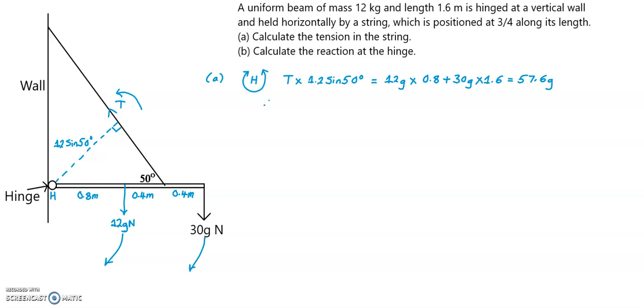Therefore T equals 57.6 times g, which is 9.8 N per kg, so 9.8, all over 1.2 m sine 50 degrees, and this gives the tension in the string of 614 Newtons.